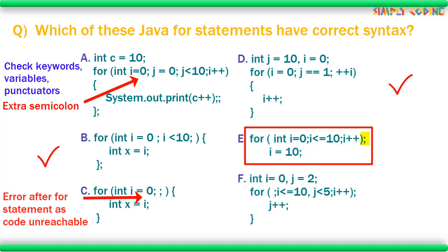The next for statement has a semicolon after the for loop — will it cause an error? No, it will not, but it will signal an end of the for block right there. The loop will execute but it is an empty loop. The statement i equals 10 is not part of the loop but the next statement after the loop. There is no syntax error here, but there is an error as the scope of i ended along with the for block, so i will show up as an undeclared variable.